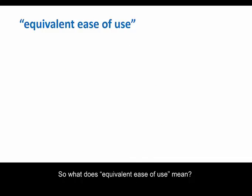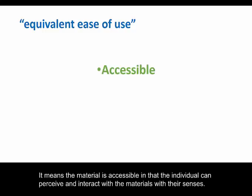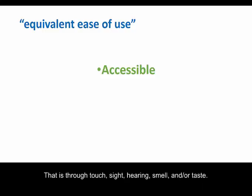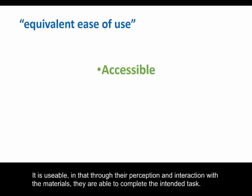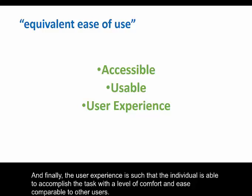So what does equivalent ease of use mean? You can think of accessibility as having three levels to consider. It means the material is accessible in that the individual can perceive and interact with the materials with their senses — that is, through touch, sight, hearing, smell, and/or taste. It is usable in that through their perception and interaction with the materials, they are able to complete the intended task. And finally, the user experience is such that the individual is able to accomplish the task with a level of comfort and ease comparable to others.